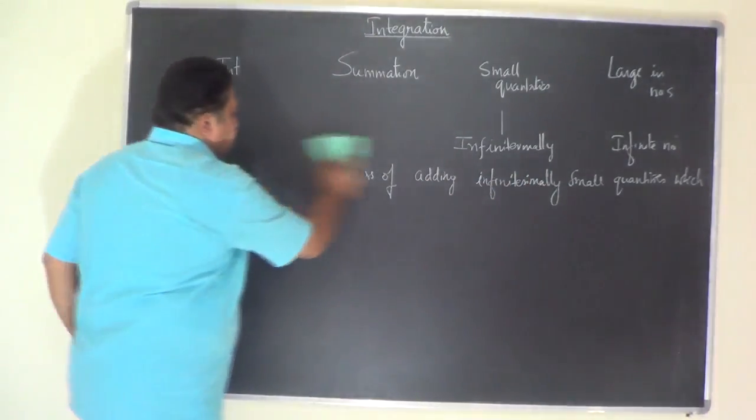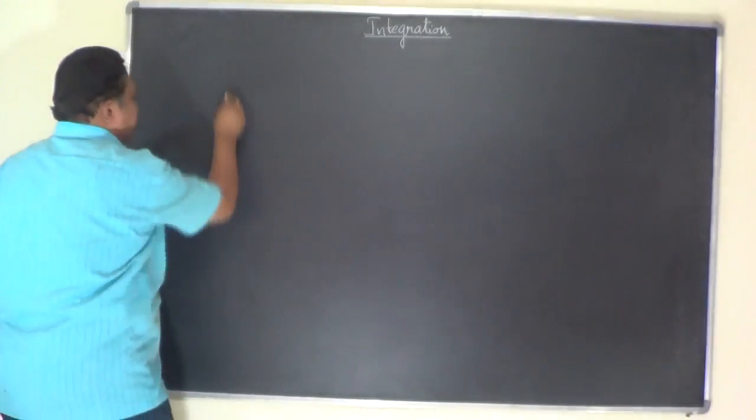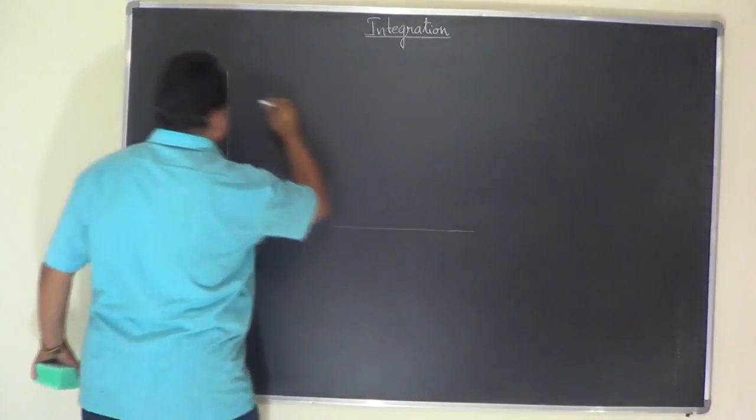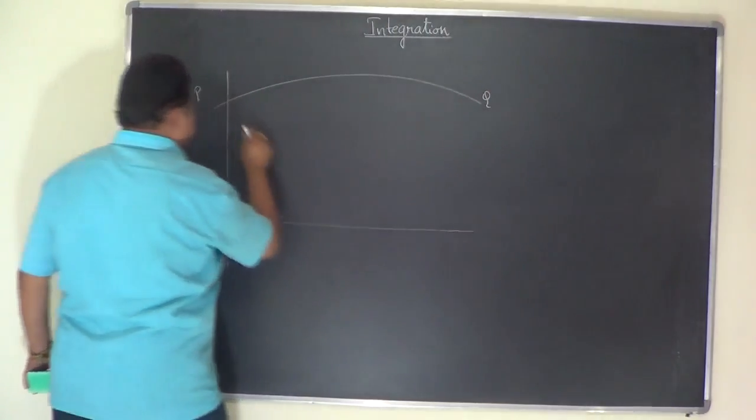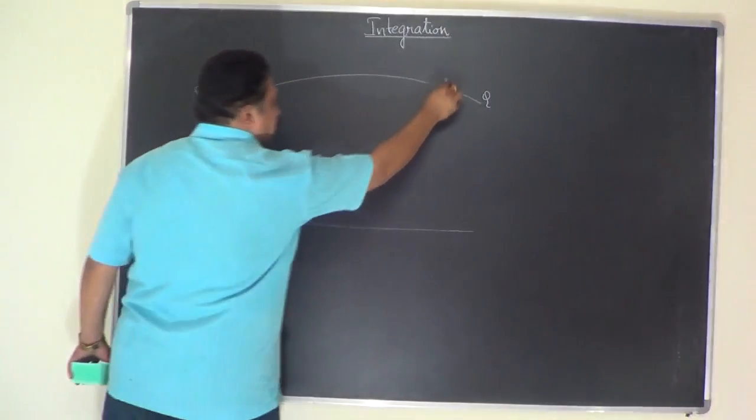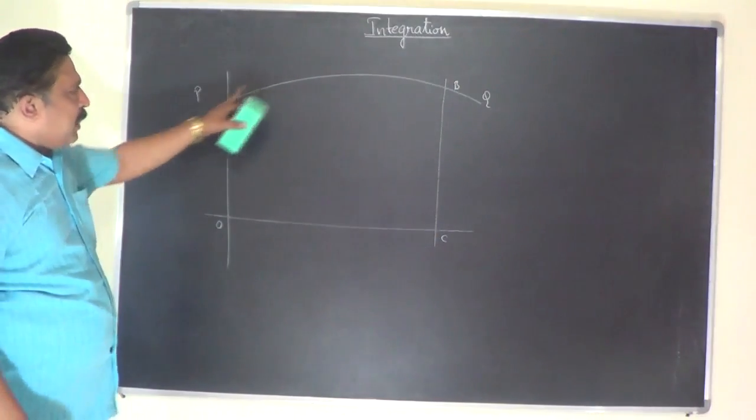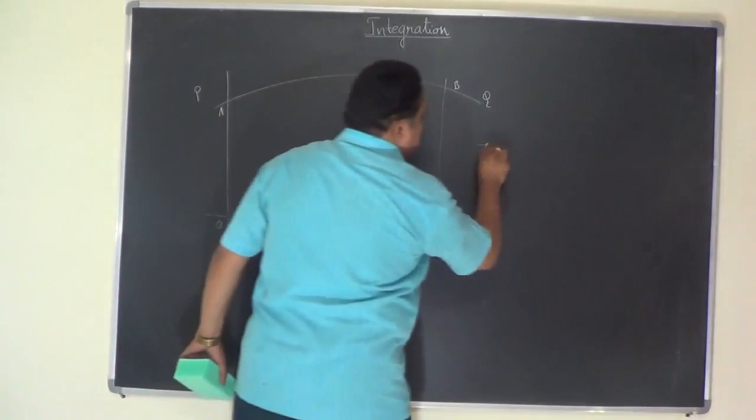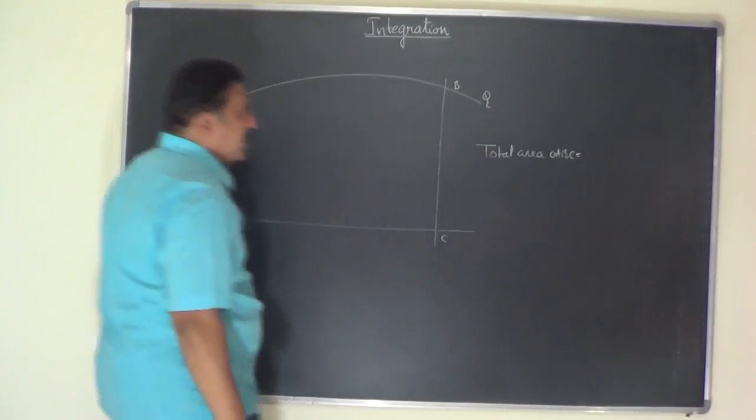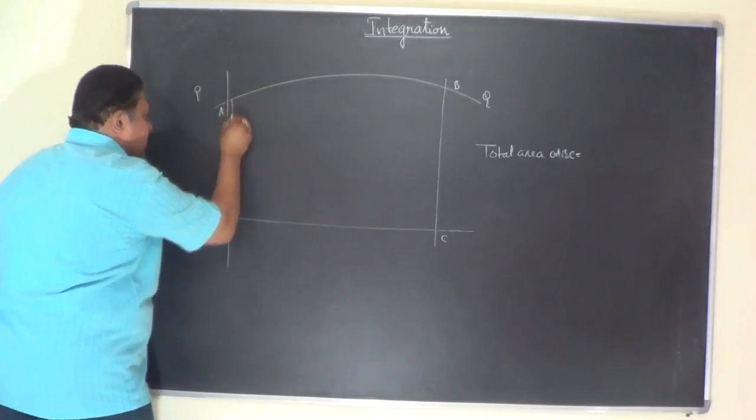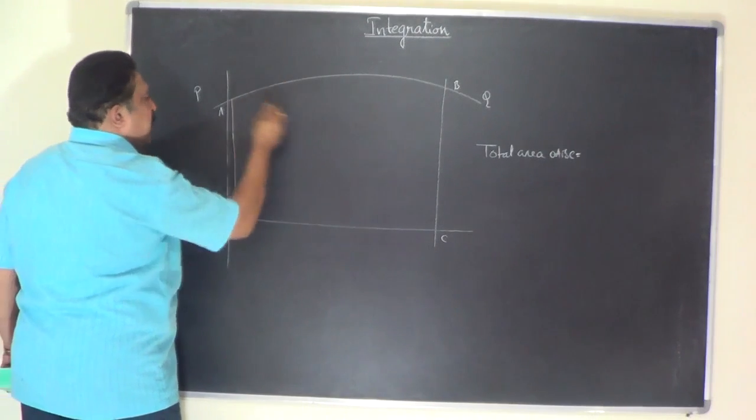For example, to understand this, let's take the area enclosed by the curve say TQ between the lines OA and some other two lines like this B and C. In order to get the total area OABC, total area OABC can be obtained by adding these tiny areas. I will divide this whole area into small intervals.